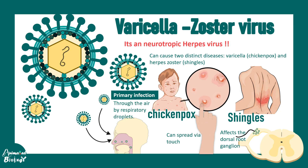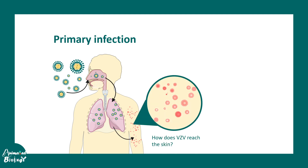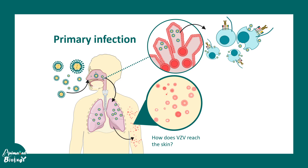The infection generally spreads via respiratory droplets and also via contact with fluid from pustules. Primary infection is always via the nasopharynx, eventually populating the lungs and then the skin. From the nasopharynx it goes to nearby tonsils, affects T-cells, and some of these infected T-cells enter the bloodstream and carry the virus to the skin.